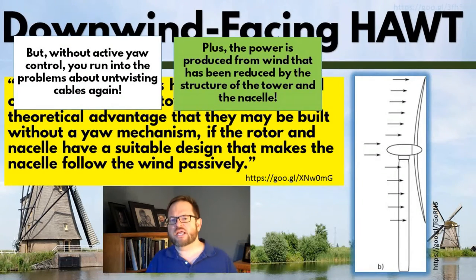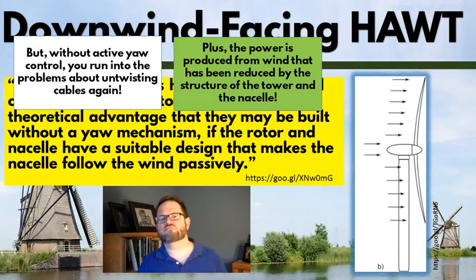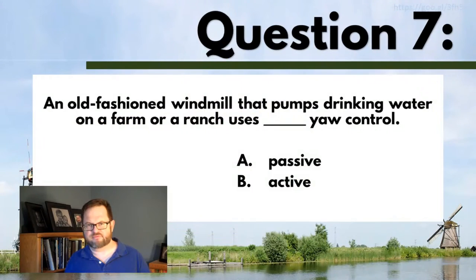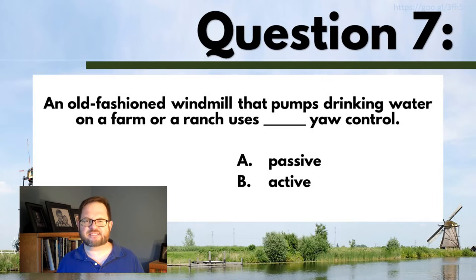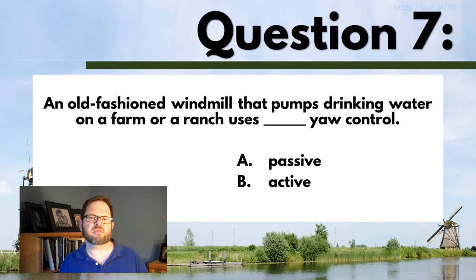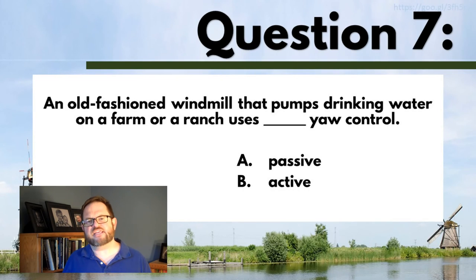Before we go on, let's take a few minutes to answer a couple of quick questions about what we've just seen in part three. An old-fashioned windmill that pumps drinking water on a farm uses what type of yaw control — passive or active? How does it continue facing upwind? Make a choice from your two options and get a little feedback before you go on to question eight.